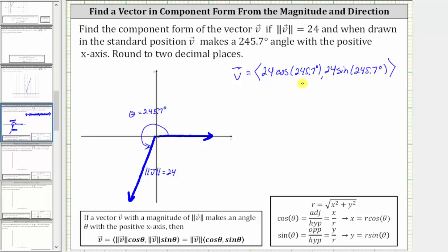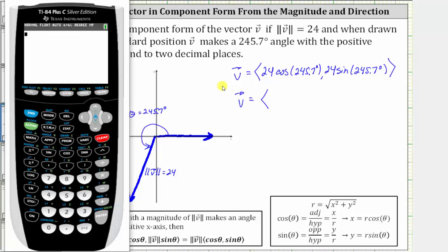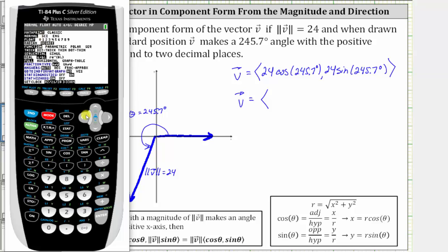With an angle like 245.7 degrees, we'll have to get decimal approximations for the trig function values. Going to the calculator, we first need to make sure the calculator is in degree mode by pressing mode, going down to the third row and highlighting degree, which in this case is already done. If it was not highlighted, we would press enter once the cursor is blinking on degree, then go back to the home screen by pressing second mode for quit.